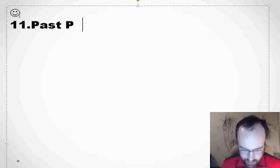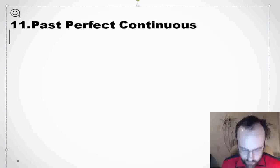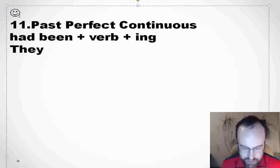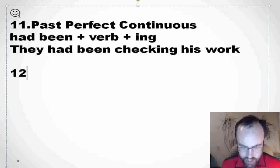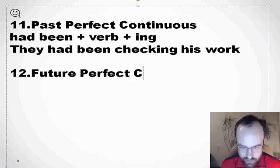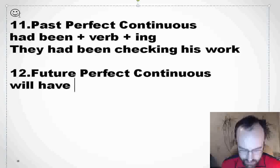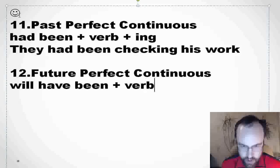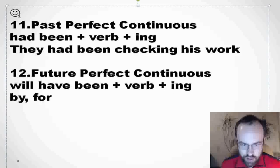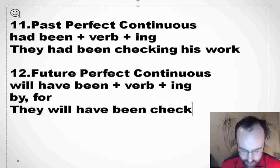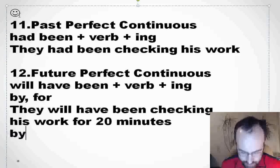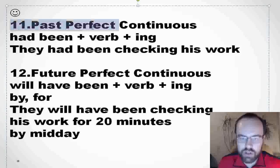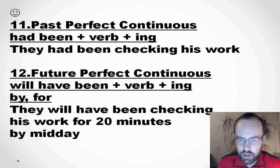Past perfect continuous — we form it with had been plus verb plus -ing. For example: they had been checking his work. We mostly use it in complex sentences. And finally, future perfect continuous — this tense isn't so common, but you need to know the structure: will have been plus verb plus -ing. We use it when we have 'by' and 'for.' For example: they will have been checking his work for 20 minutes by midday. You can see the formation and examples. Thank you!